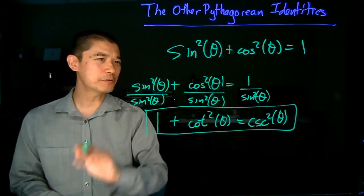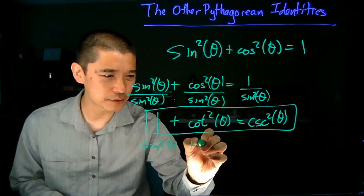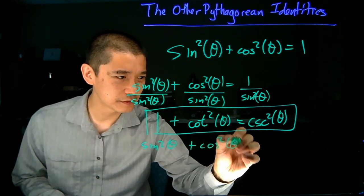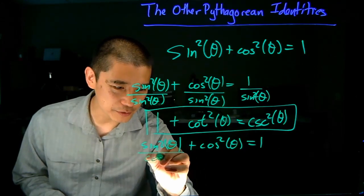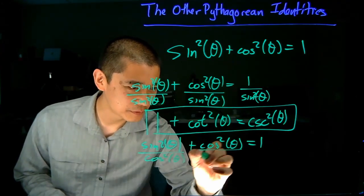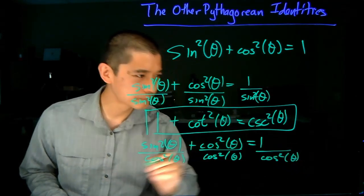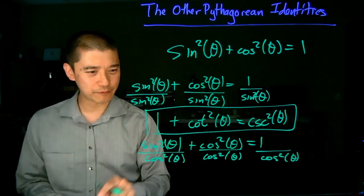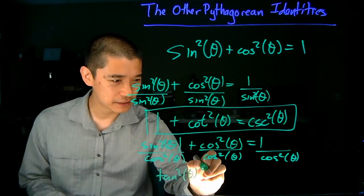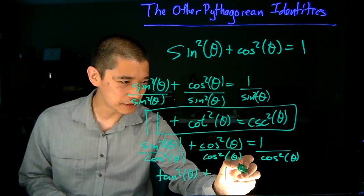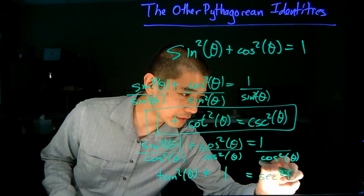Now we do the same thing except divide through by cosine squared theta. Sine squared theta plus cosine squared theta equals 1 — divide everything by cosine squared theta. Sine over cosine is tangent theta, so that's tangent squared theta. Cosine over cosine is 1, equal to 1 over cosine, which is secant squared theta.